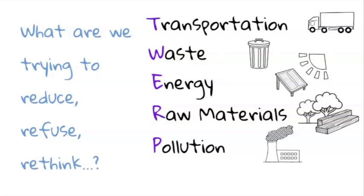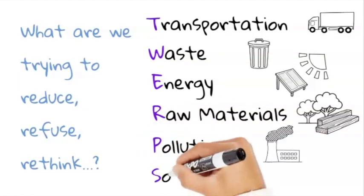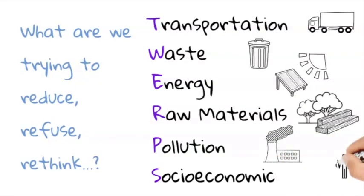Then finally we have the socioeconomic factors, such as fair pay or fair trade and working conditions of the people that manufacture the product. We can use the acronym of TWERPS to help us remember these key considerations of sustainable design. So we have the six R's, these actions to help us be more sustainable. Then we have TWERPS to help us remember what it is exactly we are trying to reduce or refuse.